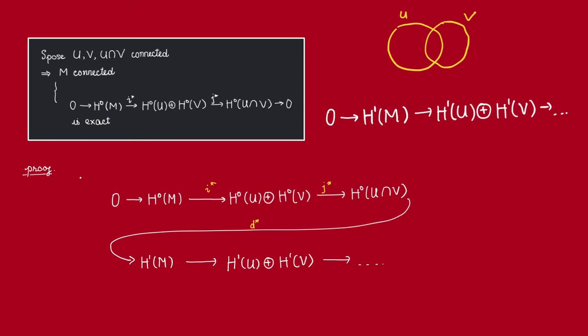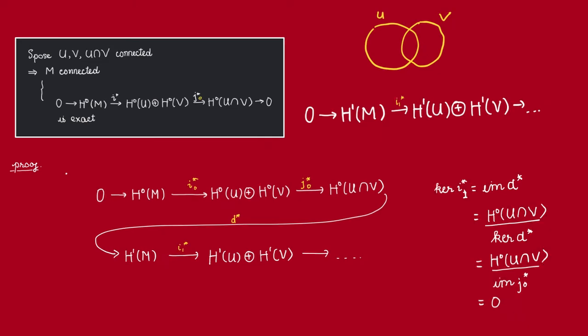This implies in particular that we can start the long exact sequence with H1. So we have this following sequence is going to be exact. We will use this quite often. So why does exactness of this sequence here imply exactness of this sequence here? In other words, why does the surjectivity of this J0 imply injectivity of this I1?